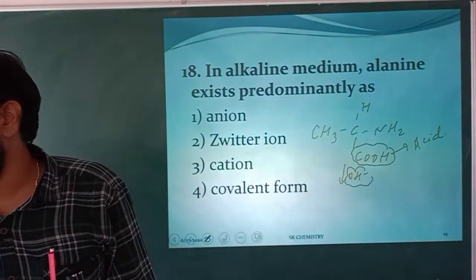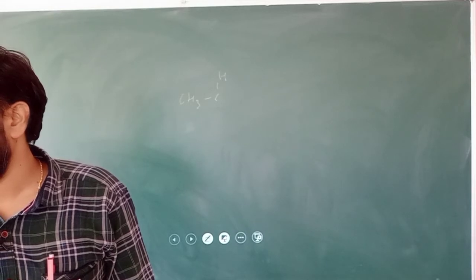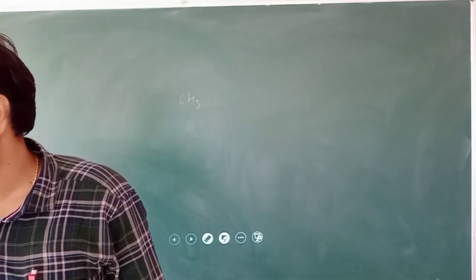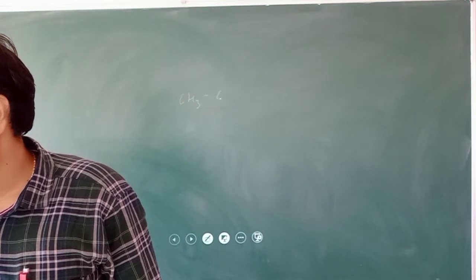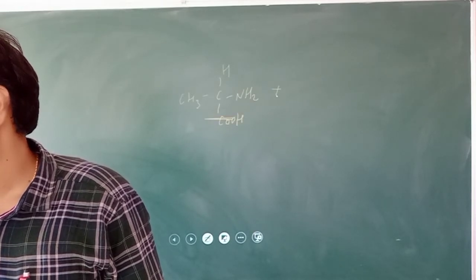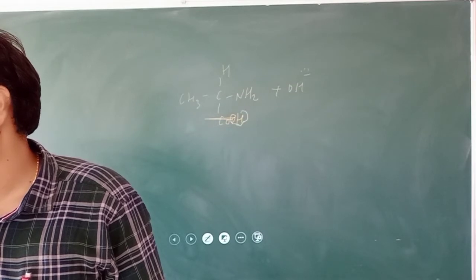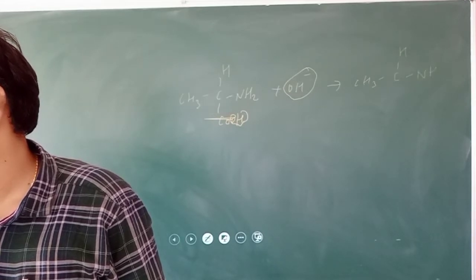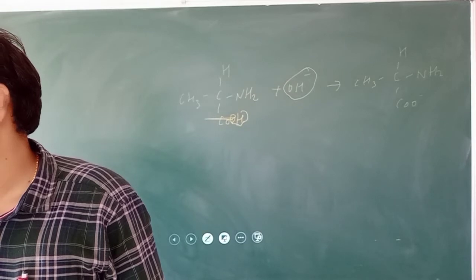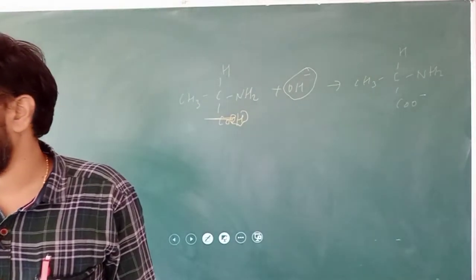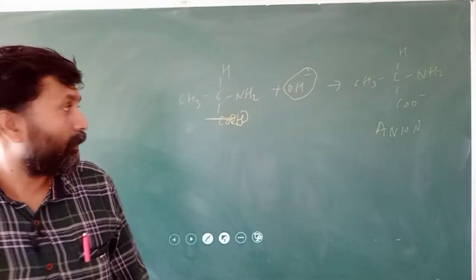Once the acid group reacts with the base, I'll take a new slide. Alanine has NH2 and COOH. In basic or alkaline medium, the H from COOH will be eliminated, giving CH3, CH, NH2, and COO minus. COO minus is an anion.